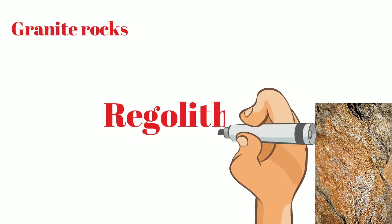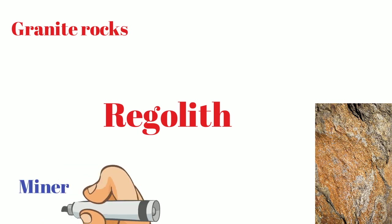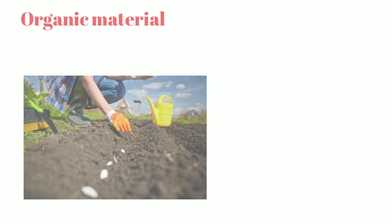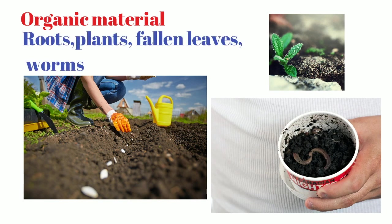The weathered material, or regolith, remains in the same place - it is simply decomposed rock. But in soil we also know there are organic materials like roots, plants, fallen leaves, small animals, worms, and bacteria. When these combine with regolith it becomes soil. Organic components are needed for soil to be fertile and give crops.